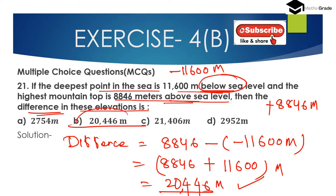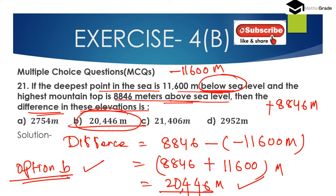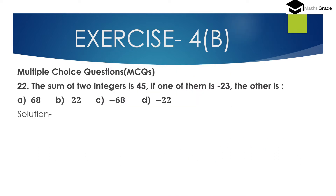Both 8,846 and 11,600 are now positive integers, so we place the positive sign. The result is 20,446 metres. So option B, that is 20,446 metres, is the correct answer. The difference in elevation between the deepest point in the sea and the highest mountain top is 20,446 metres.